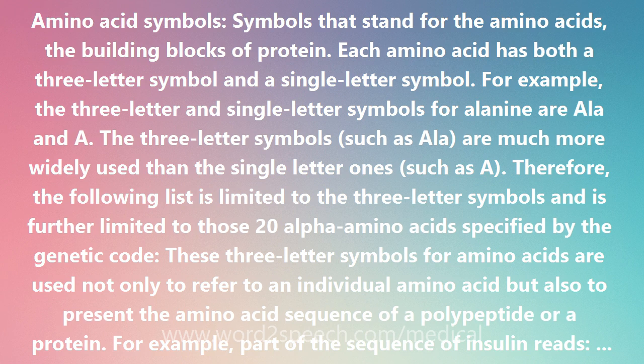Each amino acid has both a three-letter symbol and a single-letter symbol. For example, the three-letter and single-letter symbols for alanine are ALA and A. The three-letter symbols, such as ALA, are much more widely used than the single-letter ones, such as A. Therefore, the following list is limited to the three-letter symbols and is further limited to those 20 alpha amino acids specified by the genetic code.